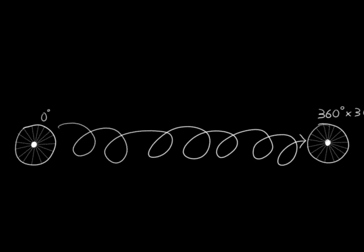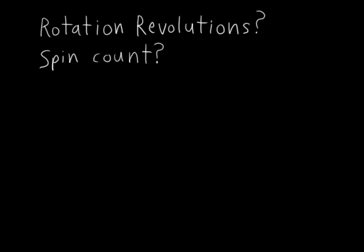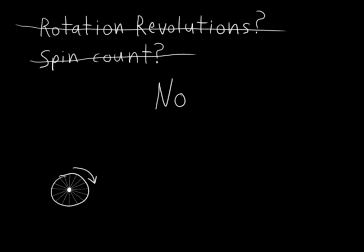But why am I calling this a rotation path? All I'm really talking about is preserving the number of revolutions of a rotation, right? Couldn't I just call it rotation revolutions or rotation spin count or something like that? Unfortunately, no. There is more to this than just the number of times an object spins around. You can get a hint of why this is by noticing that the direction you spin is important, not just the number of times you spin. And this is where the one-dimensional nature of 2D rotations and the non-one-dimensional nature of 3D rotations comes into play.